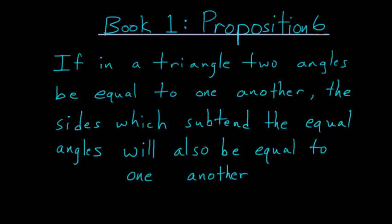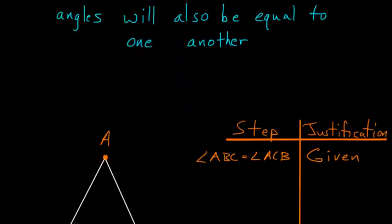Book 1 Proposition 6 of Euclid's Elements again focuses on isosceles triangles. If in a triangle two angles be equal to one another, the sides which subtend the equal angles will also be equal to one another.